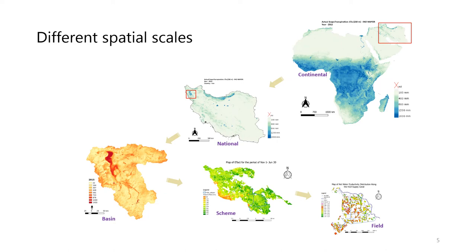This slide shows a visual representation of different spatial scales. At continental scale, this is the data obtained from the WaPOR dataset — actual evapotranspiration at 250 meter resolution. You can get a snapshot of the entire continent. It can be seasonal, monthly, or annual, depending on the temporal scale at which you are working.